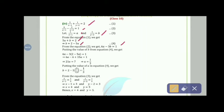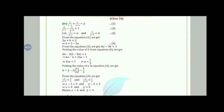Substituting b = 2 − 5a: 6a − 3(2 − 5a) = 1, giving 6a − 6 + 15a = 1, so 21a = 7, thus a = 1/3. Putting a = 1/3 into equation 4: b = 2 − 5(1/3) = 1/3. From 1/(x−1) = 1/3 and 1/(y−2) = 1/3, we get x − 1 = 3 and y − 2 = 3, so x = 4 and y = 5.